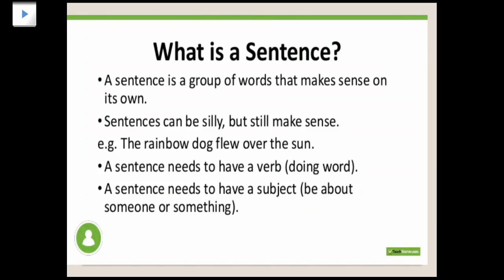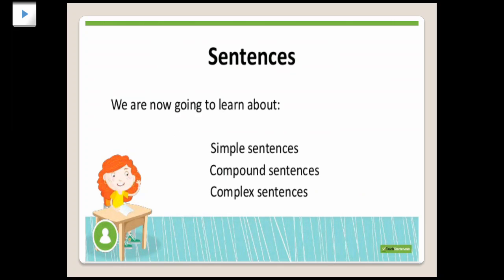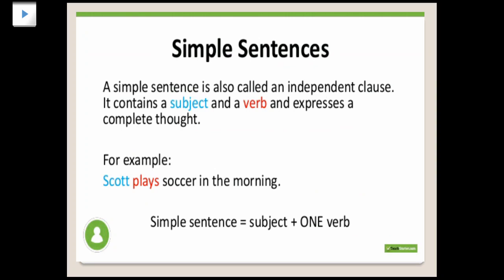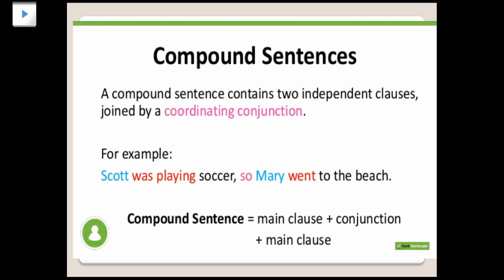In this video you are going to learn about simple sentences, compound sentences, and complex sentences. What is a simple sentence? A simple sentence is called an independent clause. It contains a subject and a verb and expresses a complete thought. For example, 'Scott plays soccer in the morning.' Here 'plays' is the verb and 'Scott' is the subject, and 'play soccer in the morning' is the predicate.